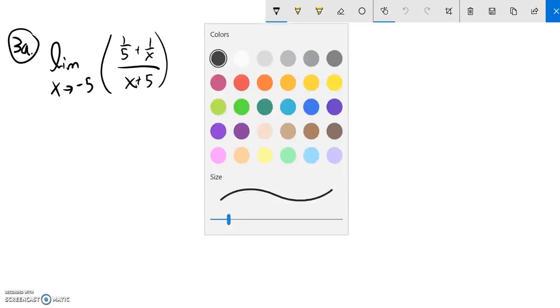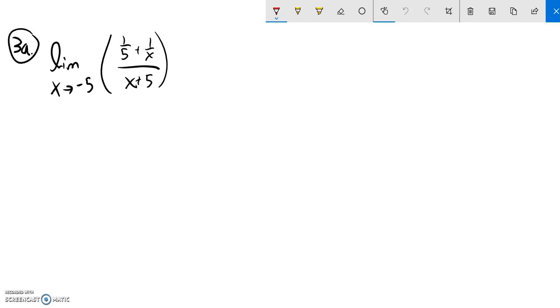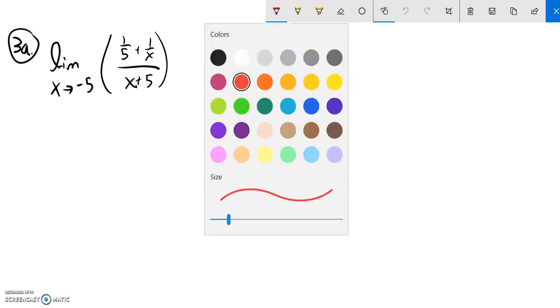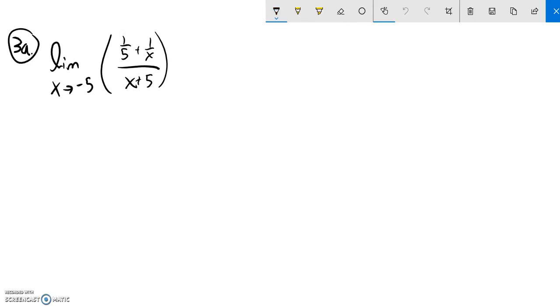Notice if I try to do some direct substitution into this, I end up with something divided by zero. So I'm not going to be able to do direct substitution. I'm going to do some manipulation to try and find this limit.